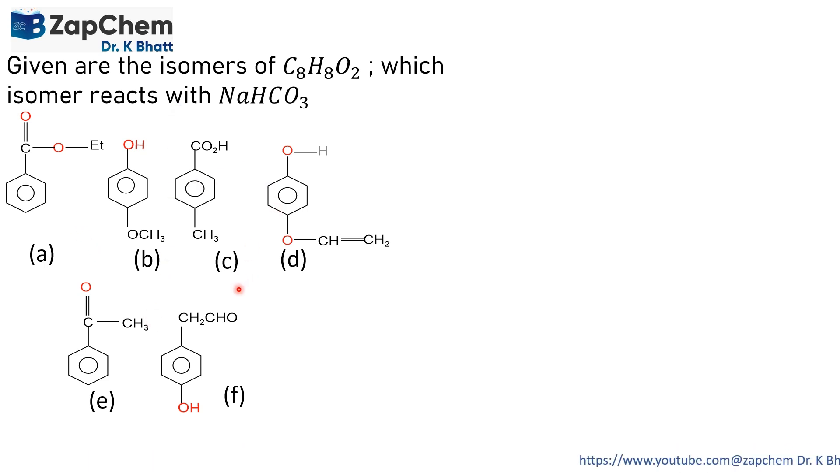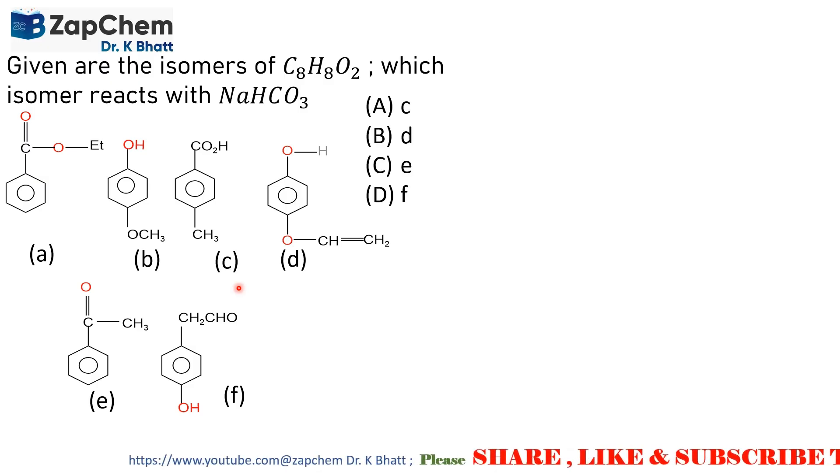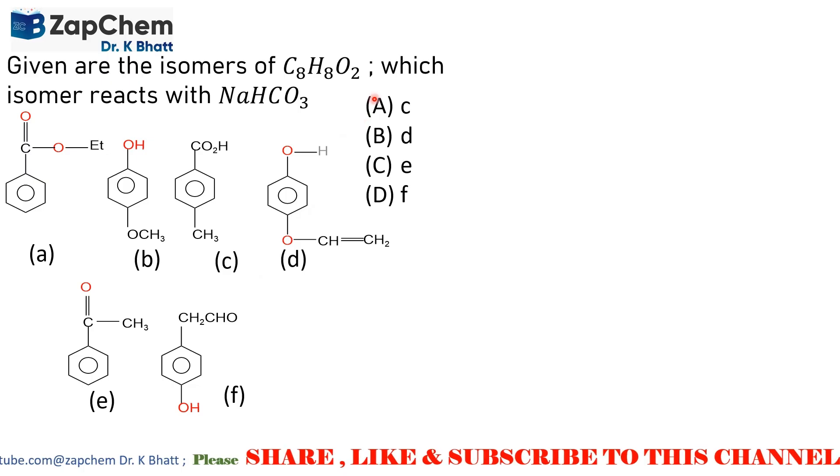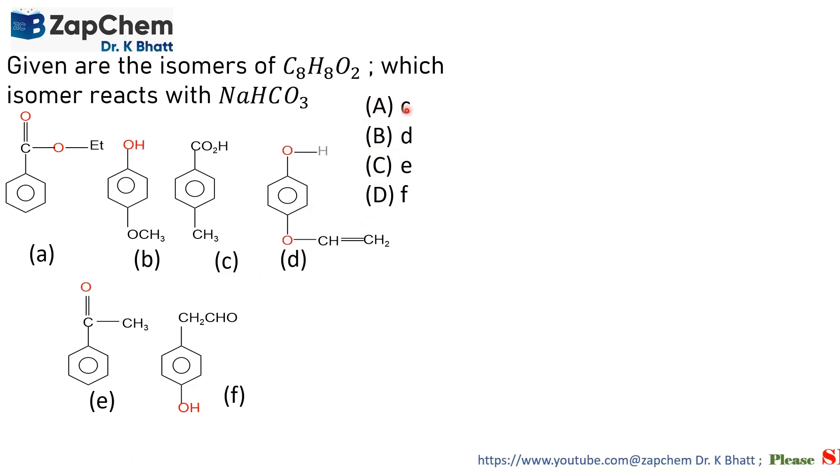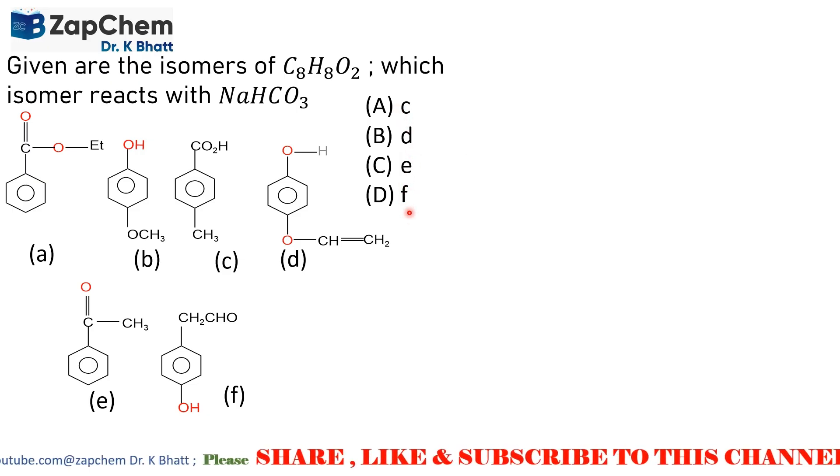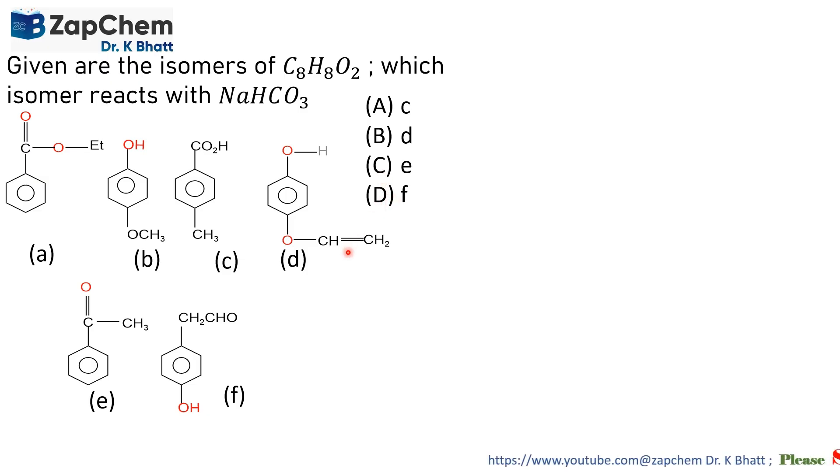Then we have to note what are the options given here. There are four options given A, B, C, D, and we have to find out the correct answer. It is surprising to note that six structures are given and the options we need to answer are four only.